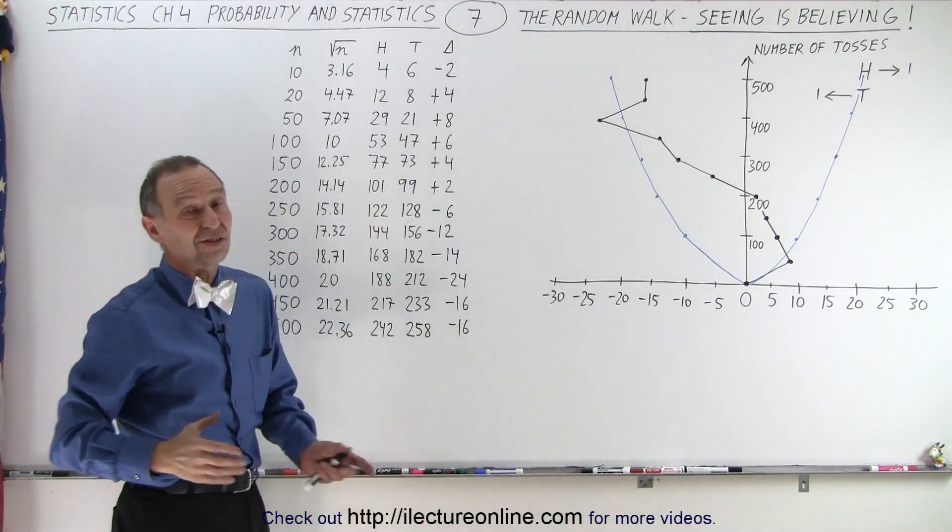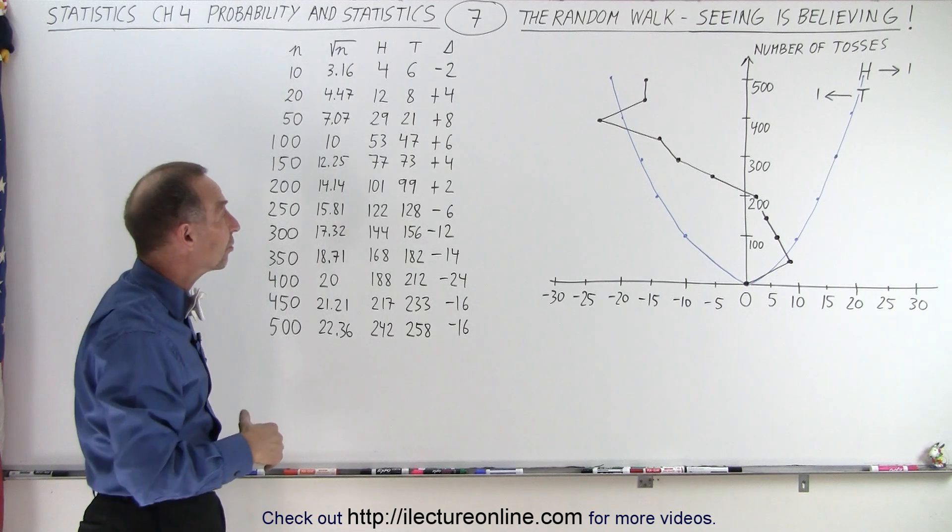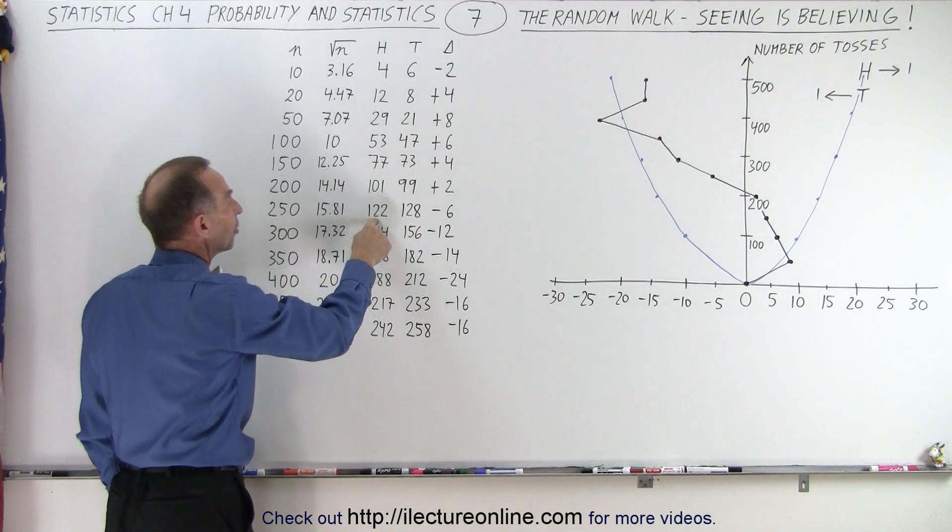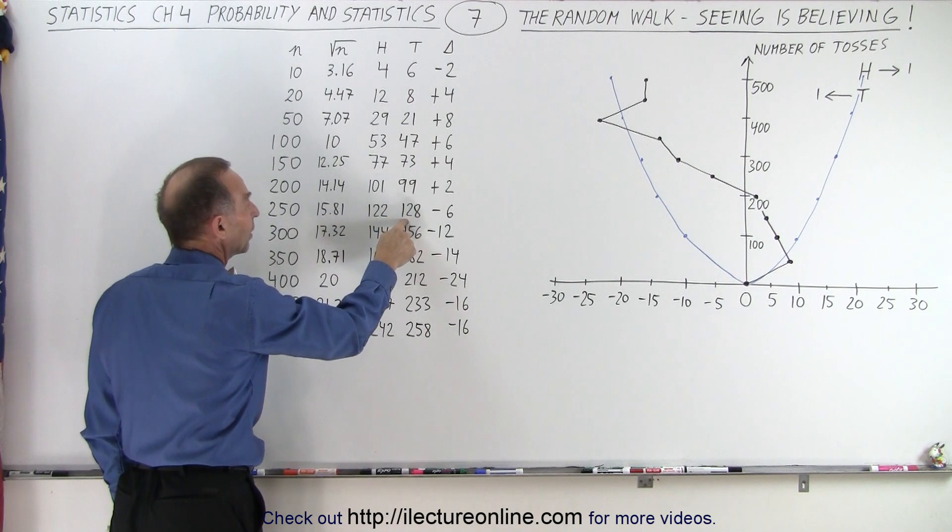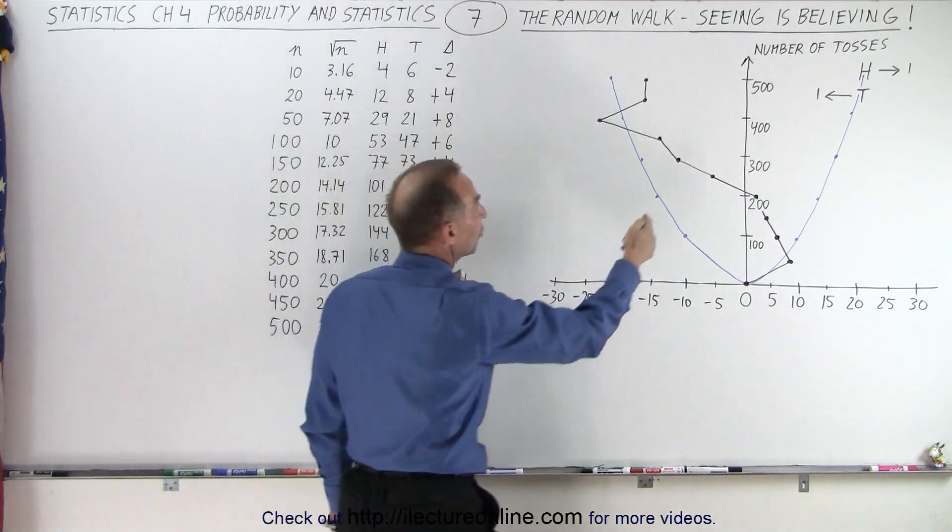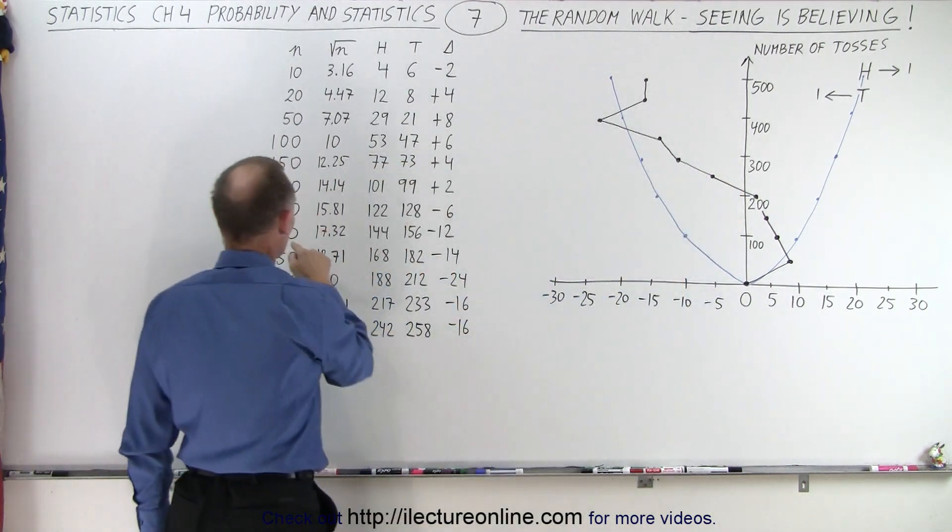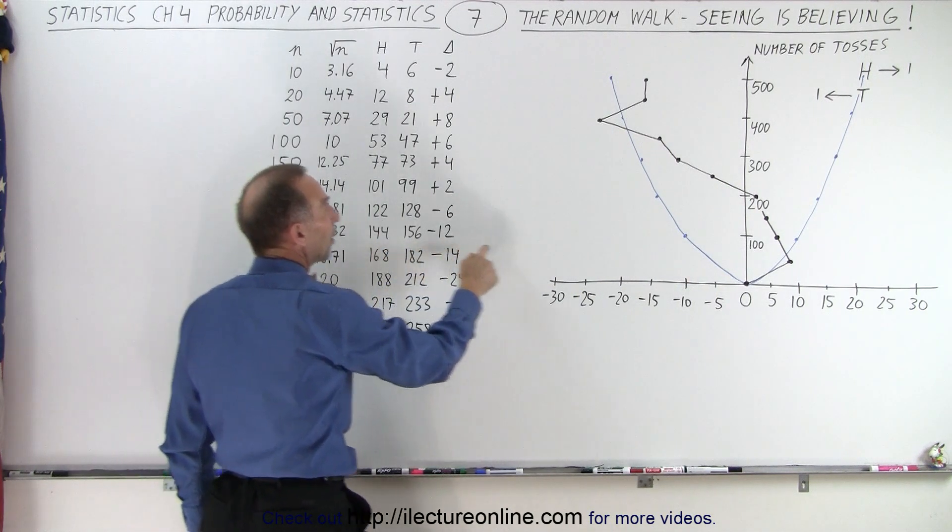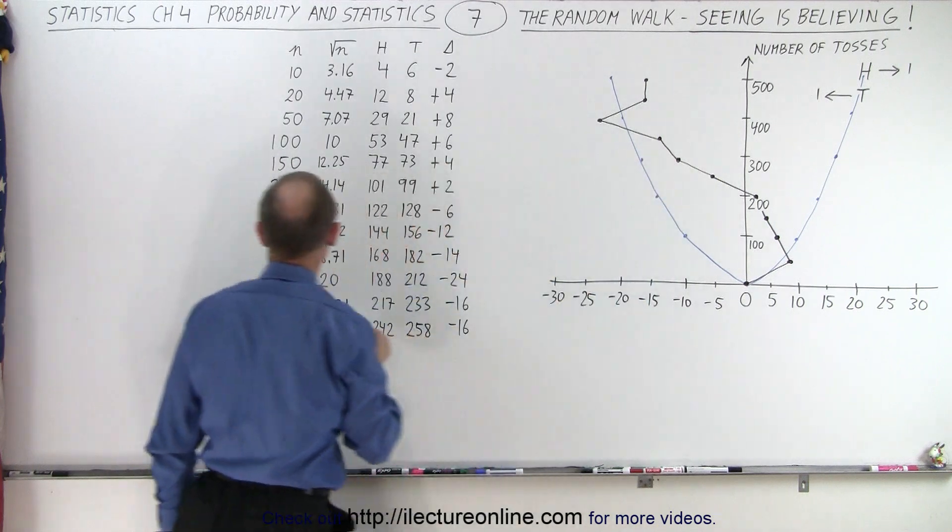But 200 tosses, even though it's a lot of work, isn't really that many tosses. So as I continued, I got up to 250 tosses and 122 heads and 128 tails, and now I was 6 units to the left. After 300 tosses I had 144 heads, 156 tails, and now I have 12 units to the left.